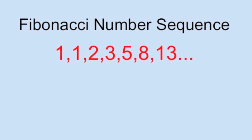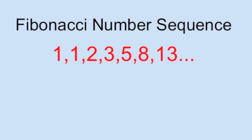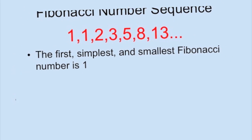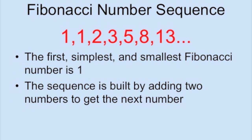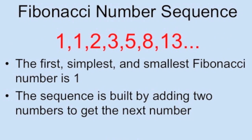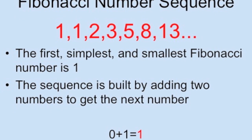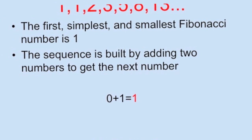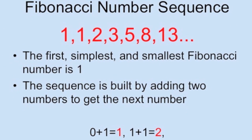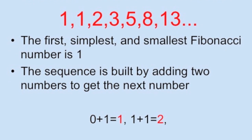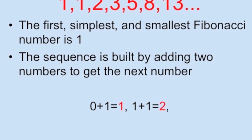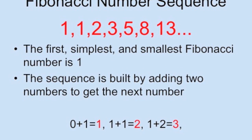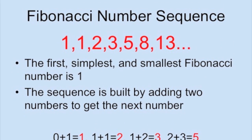He created a number series known today as Fibonacci numbers. The first, simplest, and smallest Fibonacci number is 1. The sequence is built by adding two numbers together to get the next number. If 1 is added to the number before it, which is 0, another 1 results. Now there are two numbers that can be added together to produce the next number. Adding the last two numbers in the sequence produces the next number. Each number is the sum of the previous two numbers. These are the Fibonacci numbers.